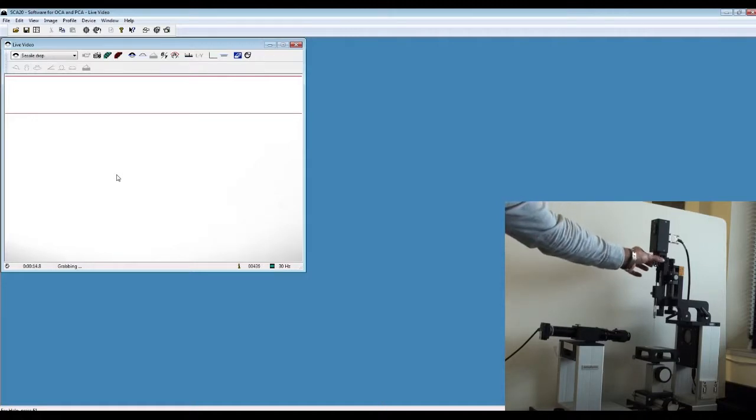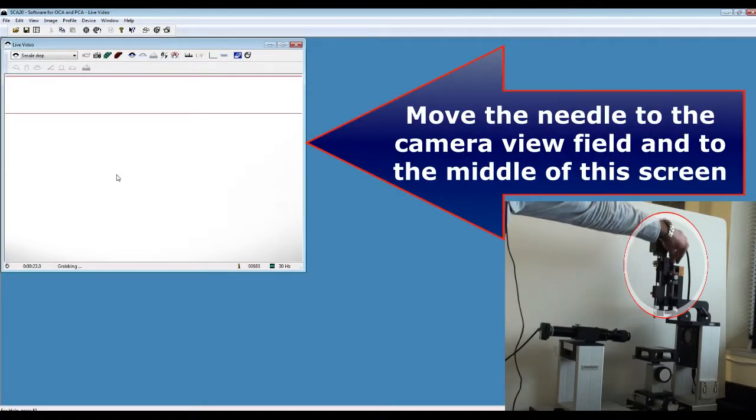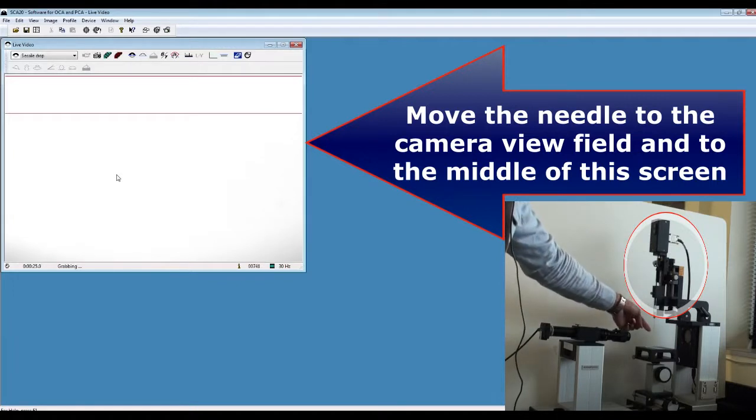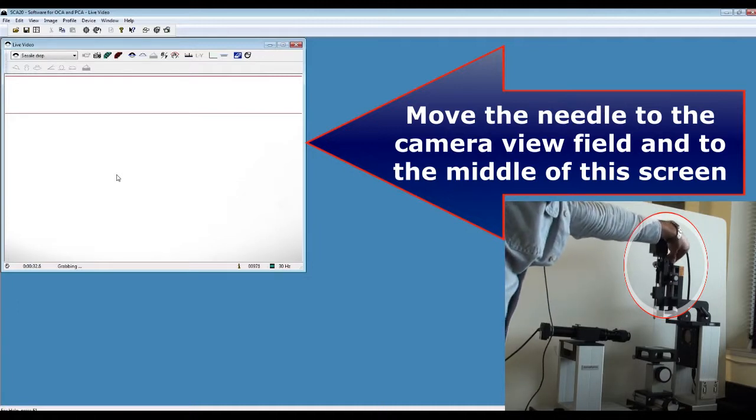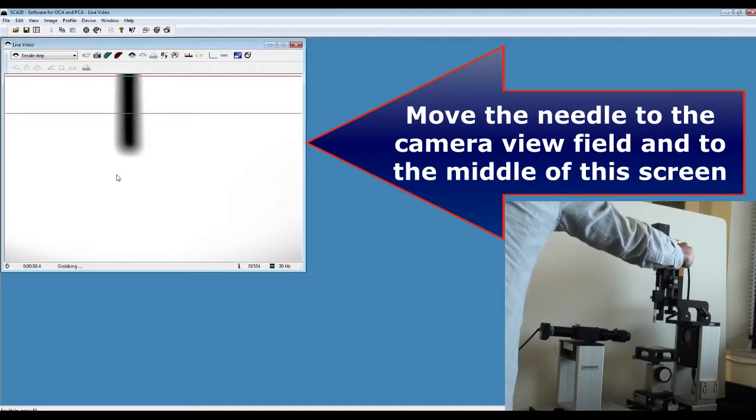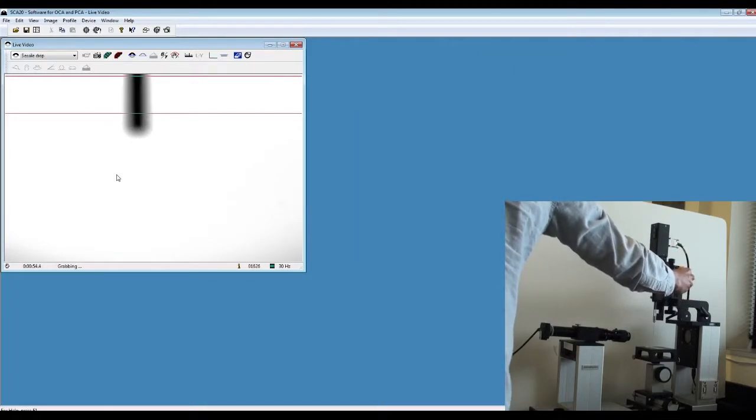Next, move the syringe holder unit down using the two designated knobs on top and on the right of the unit, so you can see the needle tip in your live view window on your software.